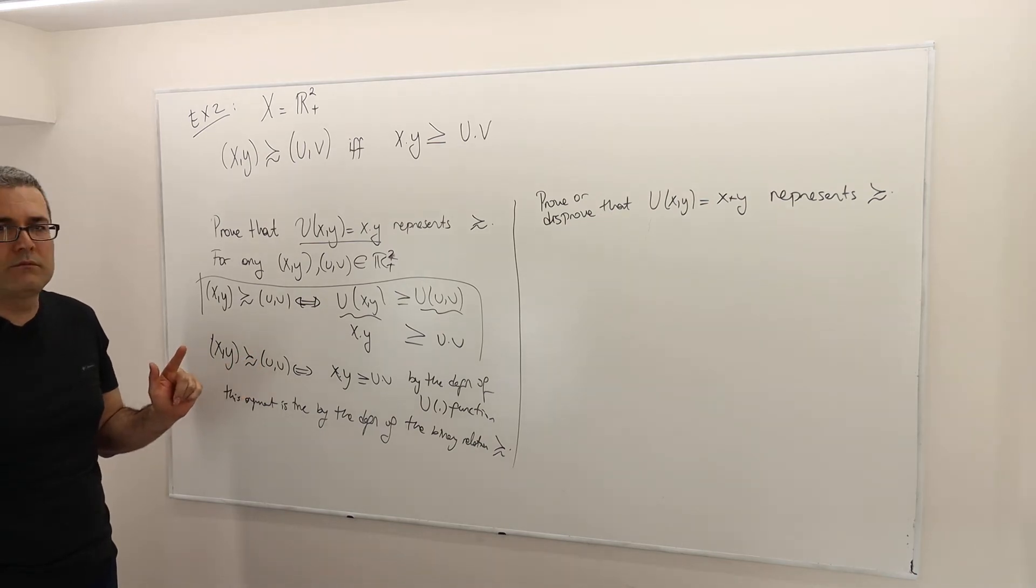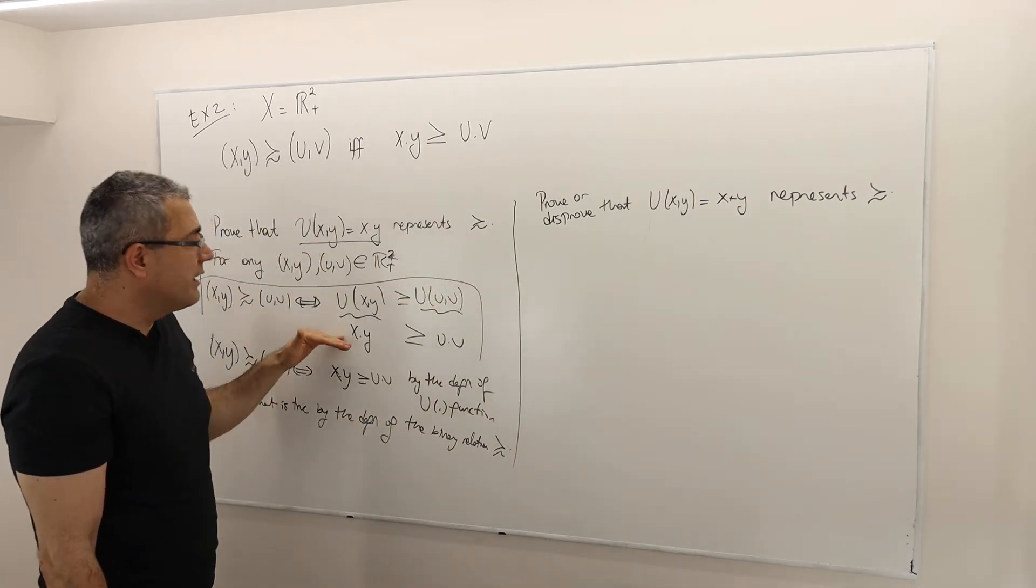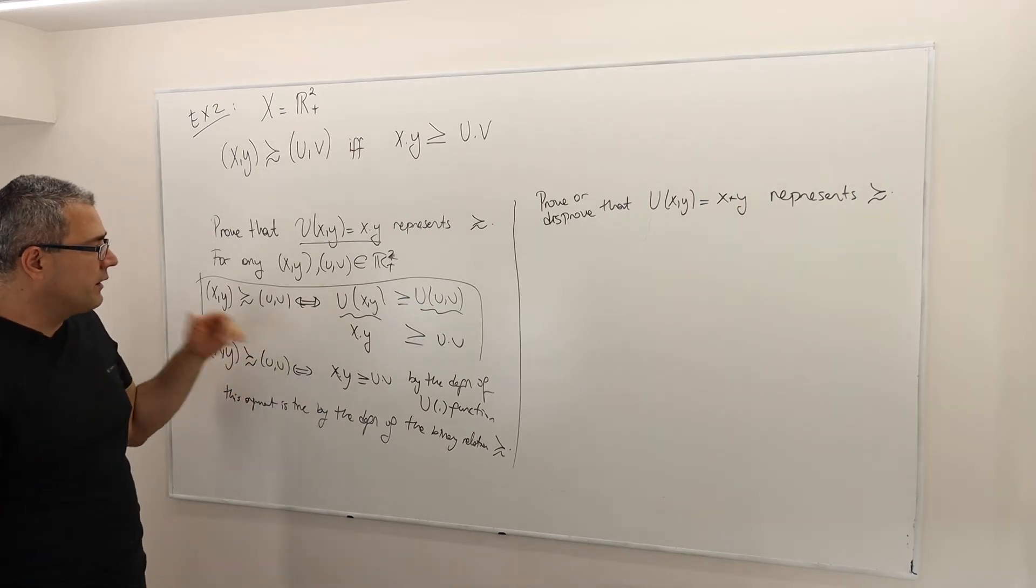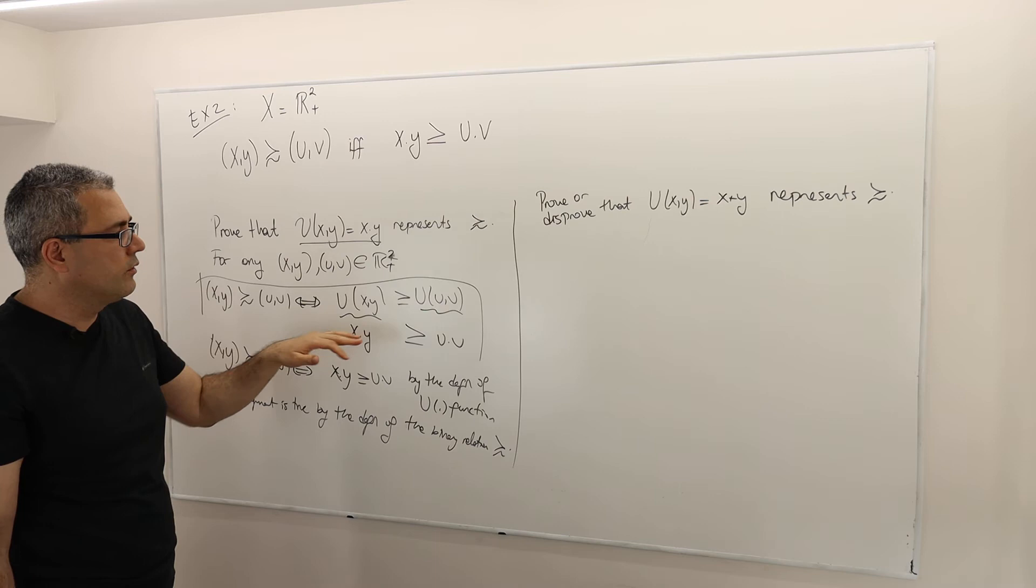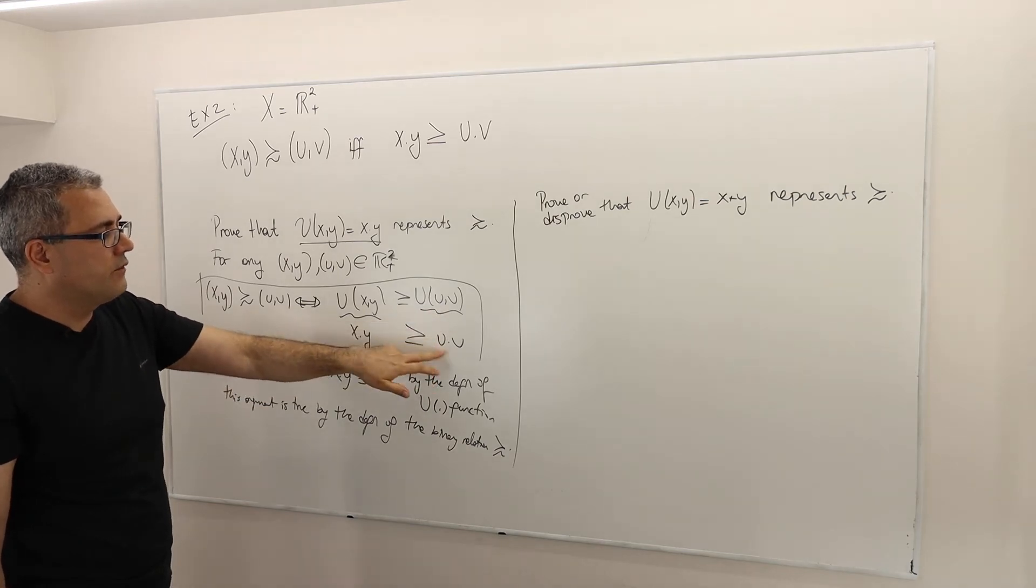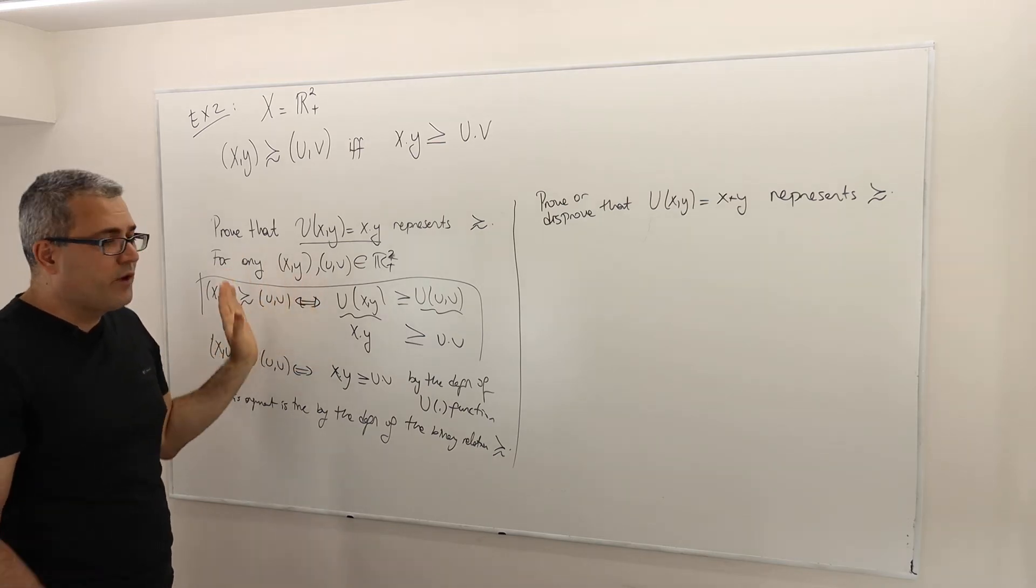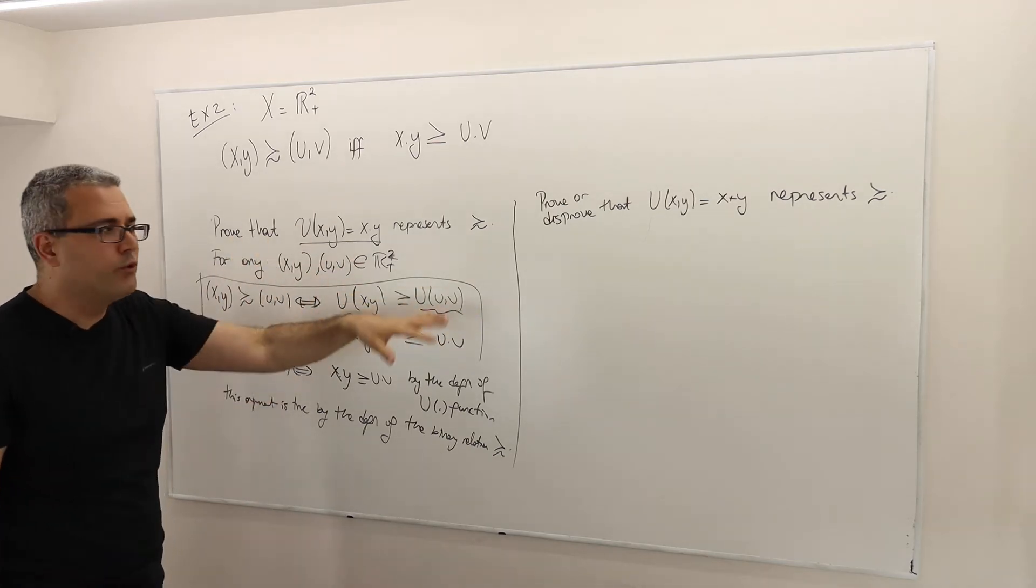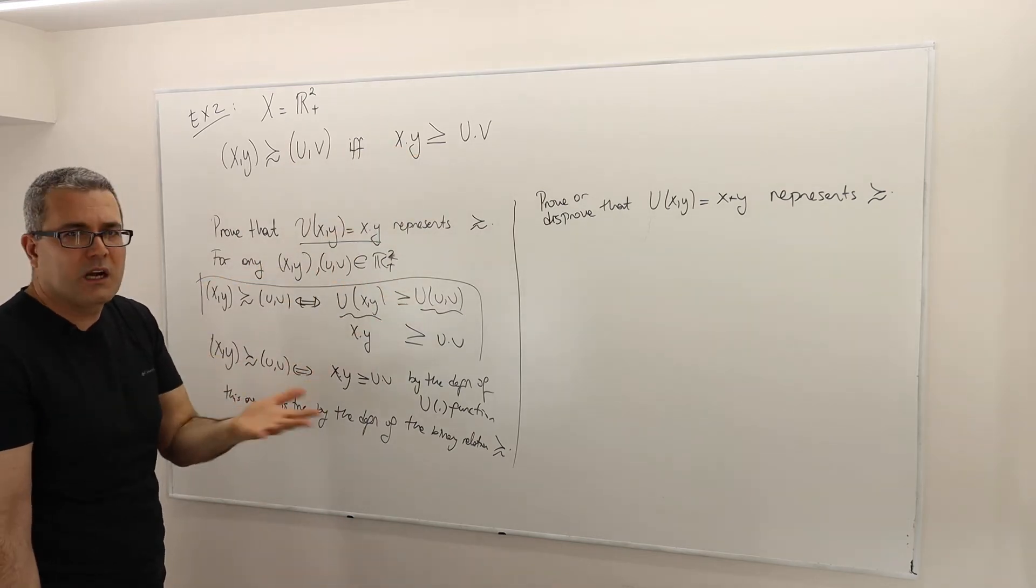Any questions? What about this: what if my utility function is X plus Y? Clearly, you're not going to be able to say this, because the utility of XY is not X times Y, it's X plus Y. Utility of UV is not U times V, it's U plus V. So I'm not going to be able to copycat this entire proof and say, well, here's the proof. It's not going to work.